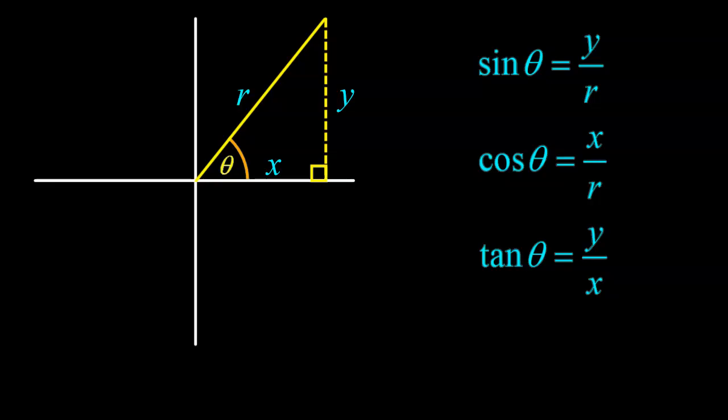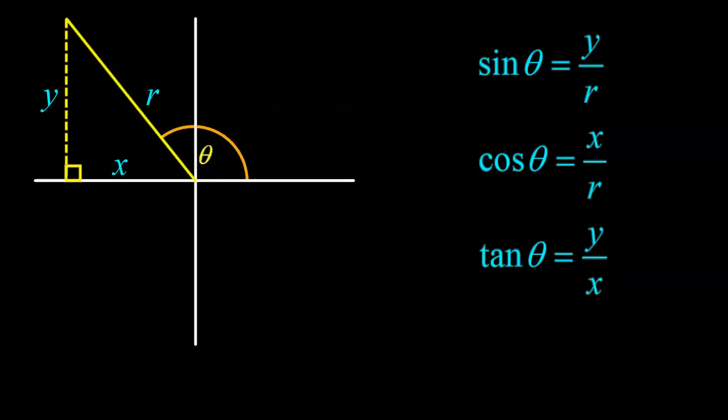Now it turns out that we're going to define sine, cosine, tan this way for all four quadrants. This here doesn't change - sine is still y over r, cos is always x over r, and tan is y over x.